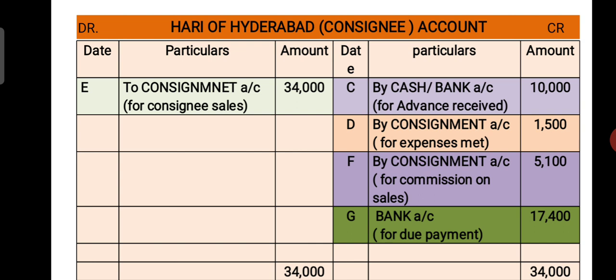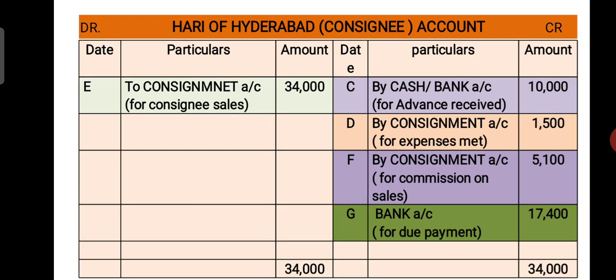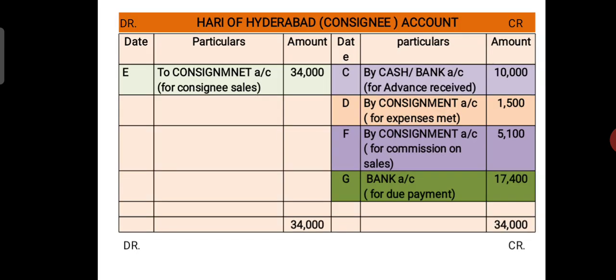The difference — deducting total credit from total debit — gives Rs. 17,400 as the due amount. That is given as a bank draft to the Consigner for settlement of the consignment account. So the total amount is Rs. 34,000. Next, we have to prepare the Goods Sent on Consignment Account.